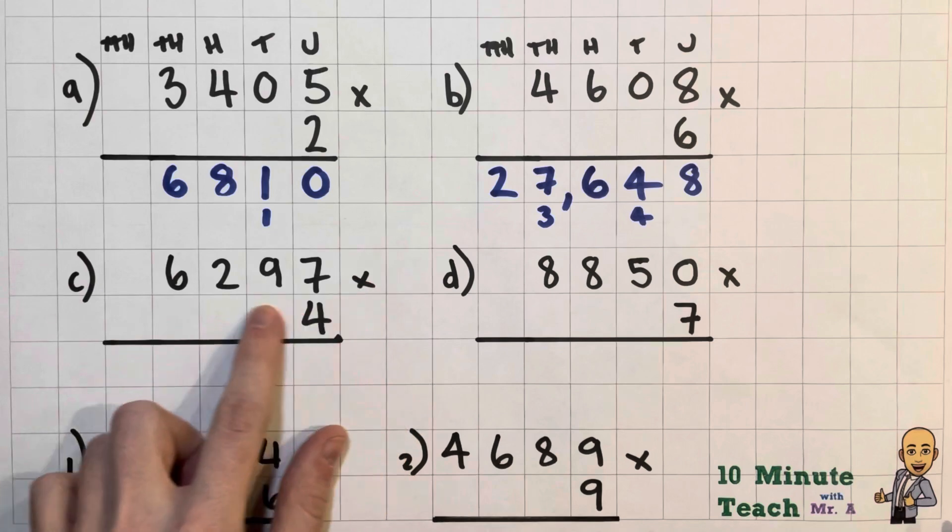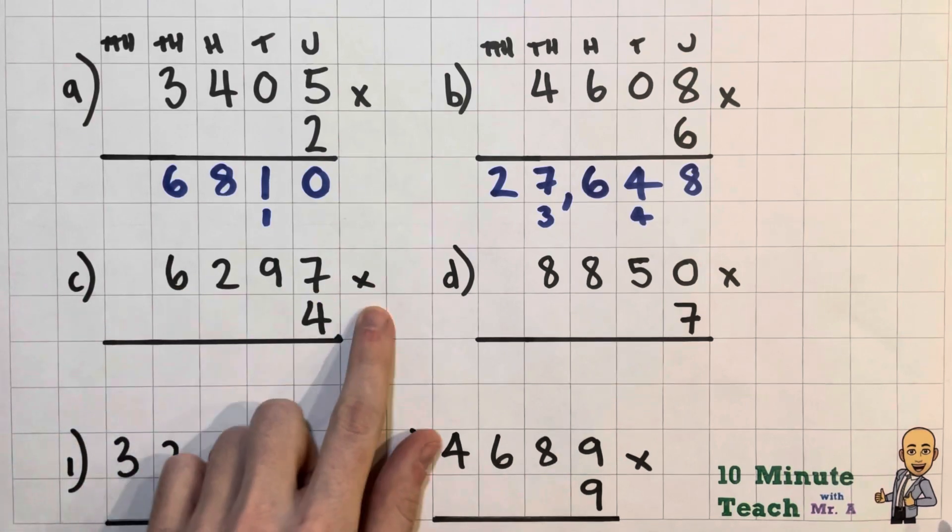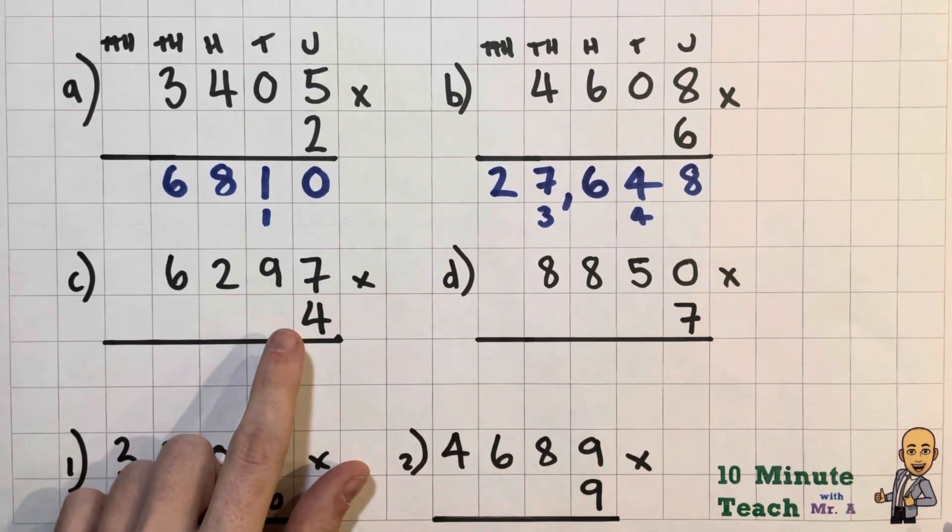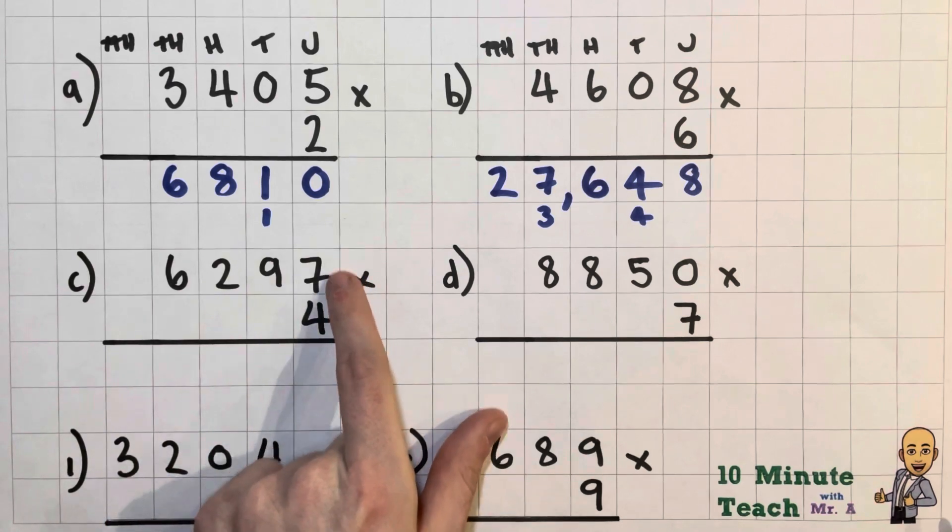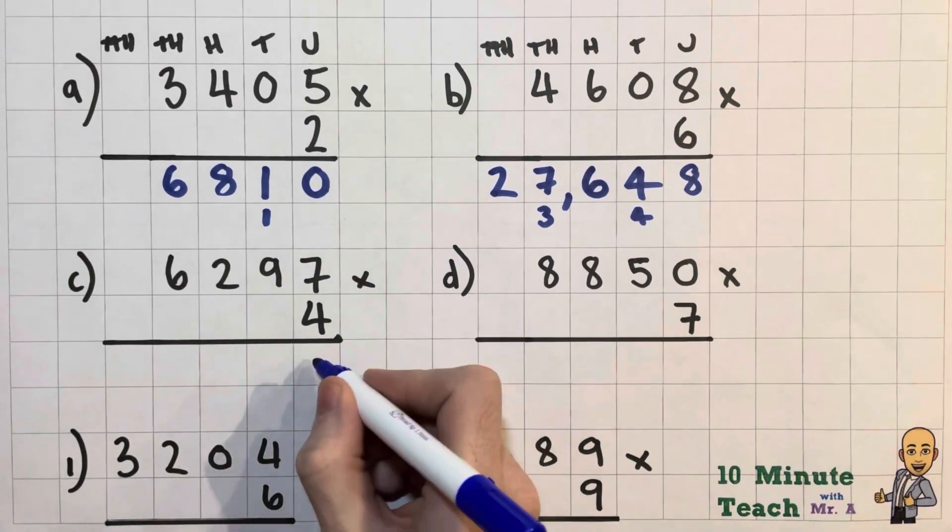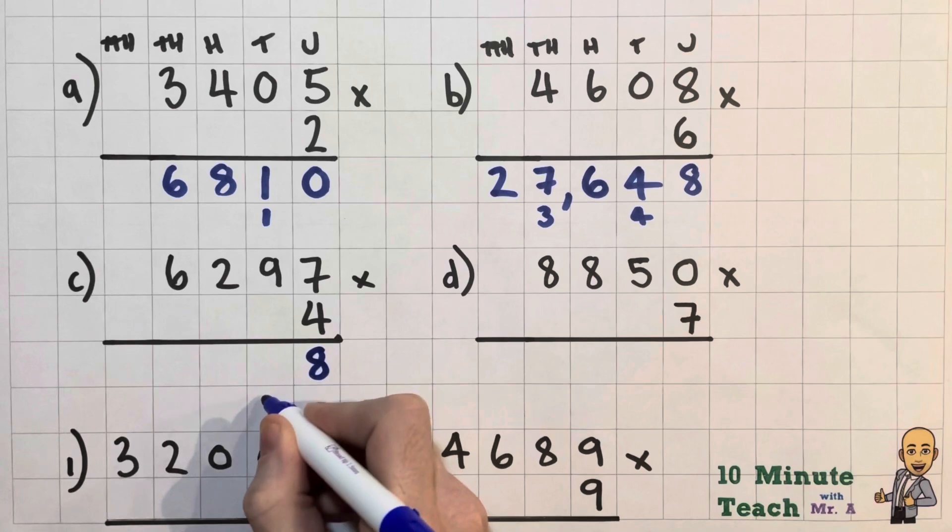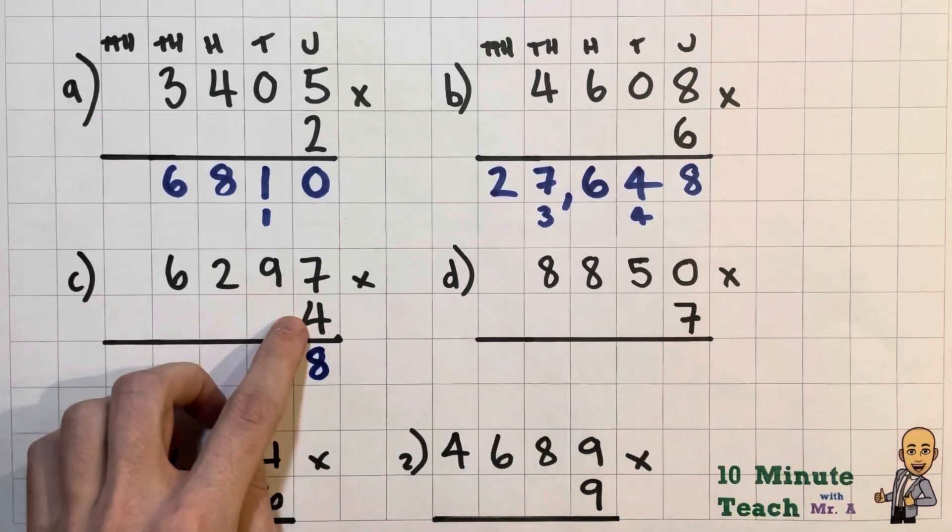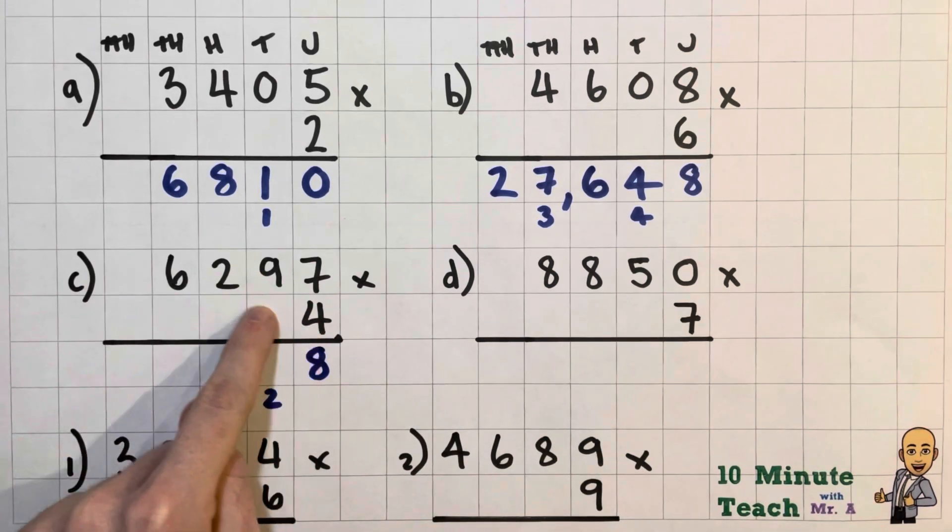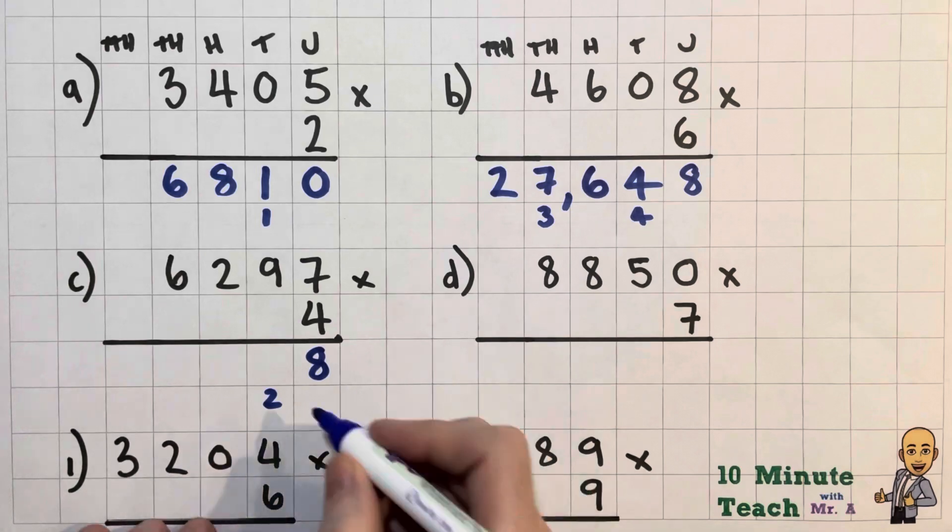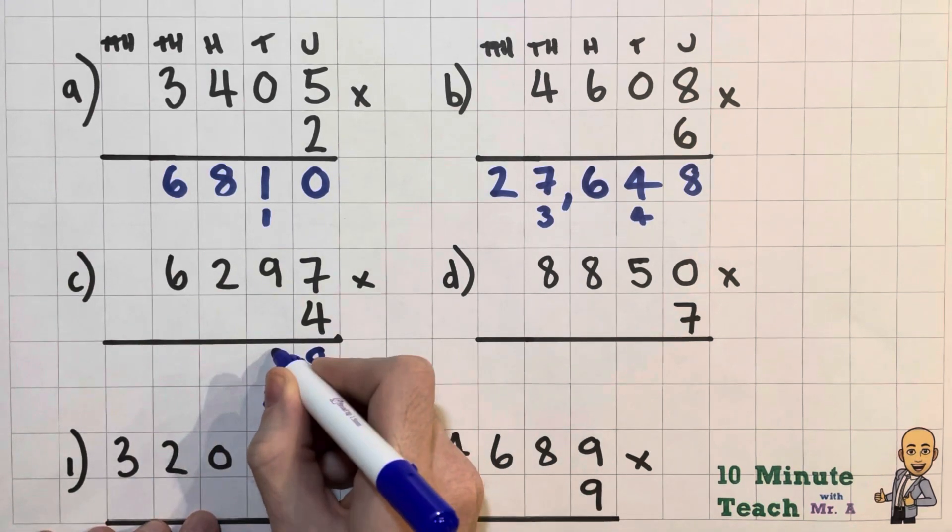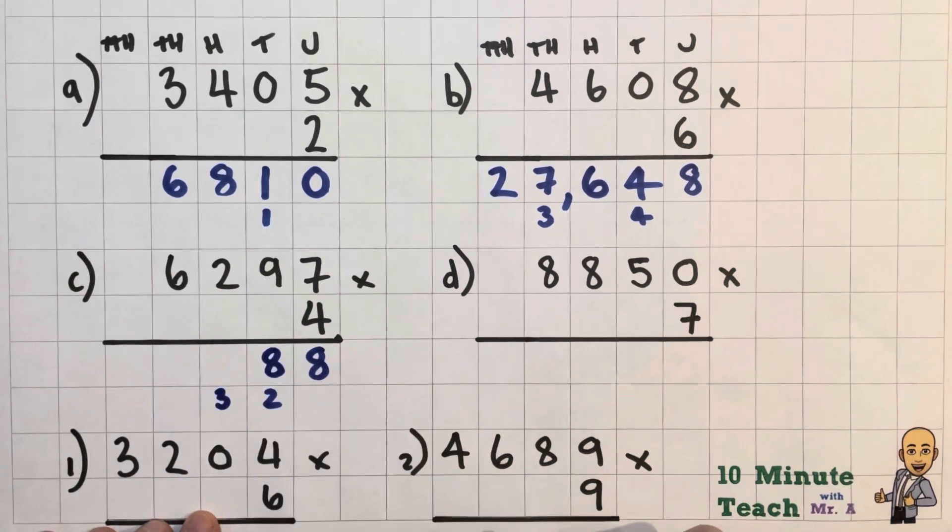So we've got 6297 multiplied by 4. So let's start over at our units column then. So 4 times 7, or 7 times 4, is 28. So if I put my units in, carry my 10, 9 times 4 is 36. Or here it's 360 because actually we've got 90 times 4.